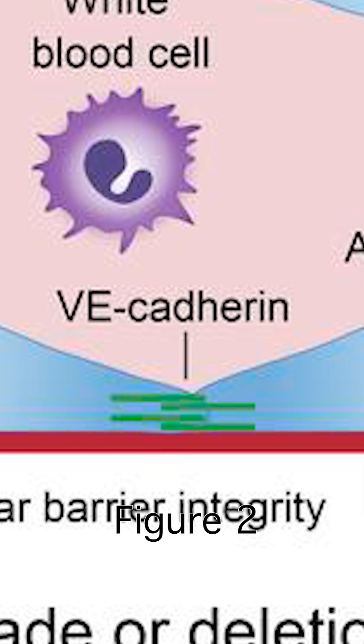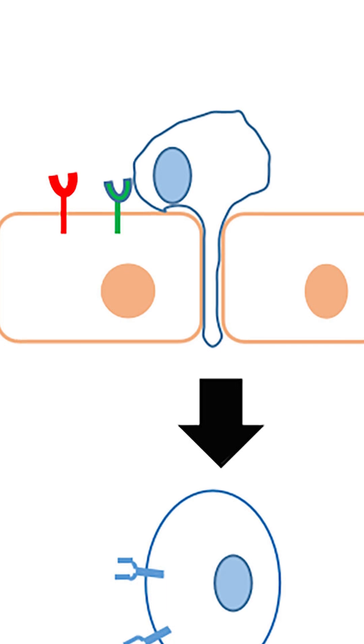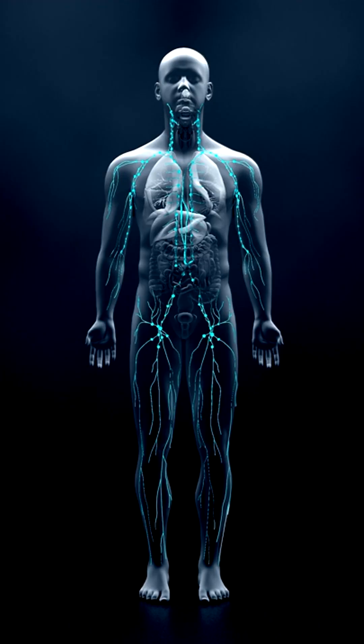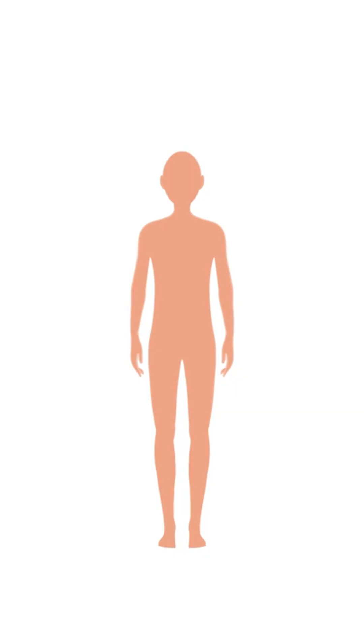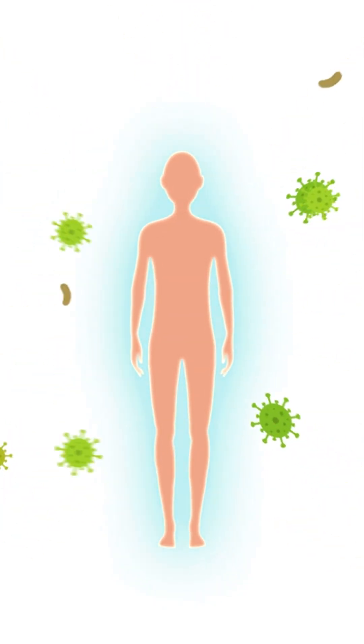The cell squeezes through in a process called diapedesis, ready to hunt down invaders. Our body's defenses aren't just strong—they're strategic: molecular spies, shapeshifters, and siege experts, all flowing in your veins.